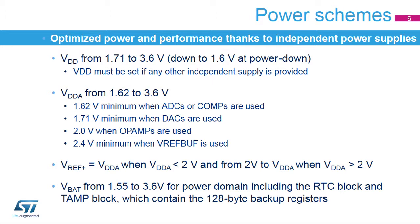VDDA is the external analog power supply for analog-to-digital converters, digital-to-analog converters, voltage reference buffer, operational amplifiers, and comparators. When the analog-to-digital converters or comparators are used, the VDDA voltage must be greater than 1.62 volt. When the digital-to-analog converters are used, VDDA must be greater than 1.71 volt. When the operational amplifiers are used, VDDA must be greater than 2.0 volt. When the voltage reference buffer is used, VDDA must be greater than 2.4 volt.